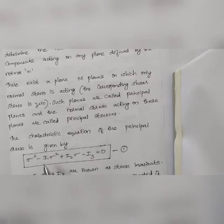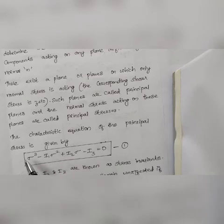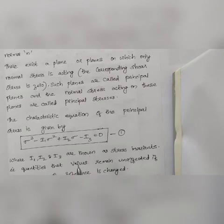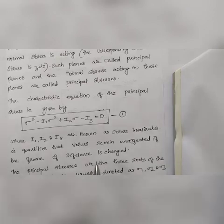The characteristic equation of principal stress is: sigma³ minus I₁·sigma² plus I₂·sigma minus I₃ = 0. This is a cubic equation. Here I₁, I₂, and I₃ are the stress invariants — their values remain unchanged or unaffected if the frame of reference is changed, i.e., if the coordinate axes xyz are shifted.